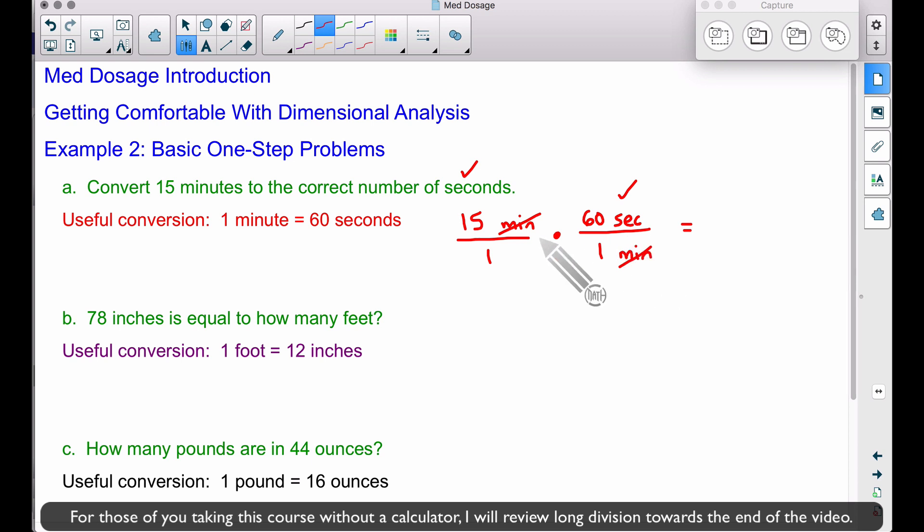To multiply fractions, we take top times top: 15 times 60 equals 900. Bottom times bottom is 1 times 1, which is 1. So 900 over 1 equals 900 seconds. Therefore, 15 minutes equals 900 seconds.